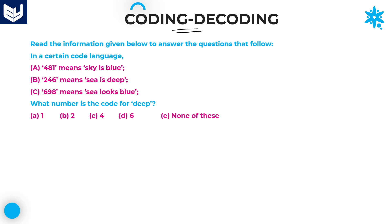481 means 'sky is blue'. These are three words and three numbers, not in the respective form. Sky means either 4, 8, or 1 - we don't know based on the remaining two sentences. By using these three sentences, we need to identify which word belongs to which number.